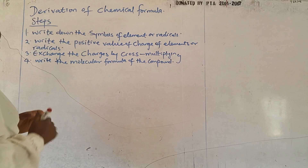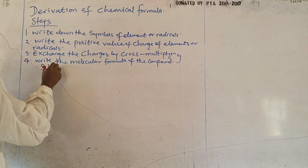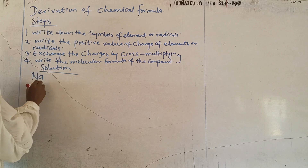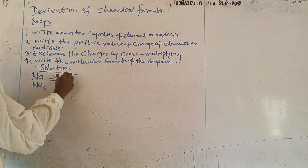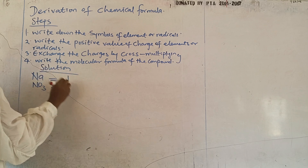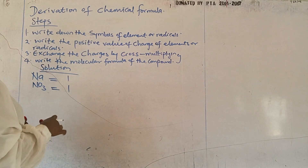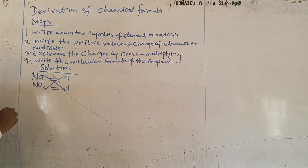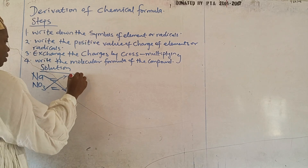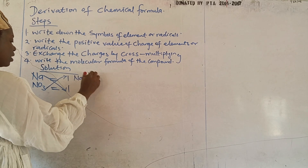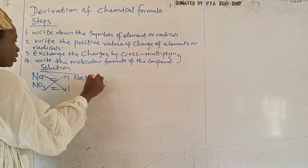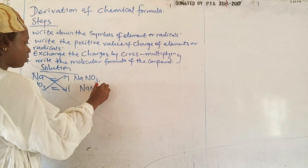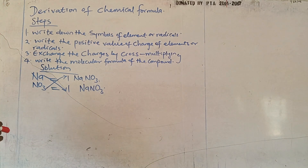The first example I'll be doing is sodium and NO₃. For sodium I have a charge of 1, and for NO₃ I also have 1. We write the positive value even if the radical has a negative charge, then we do the cross-breeding. At the end we have 1 and 1, so we get Na¹NO₃¹. In chemistry we don't write the 1, so the formula is NaNO₃.